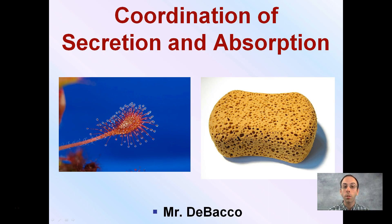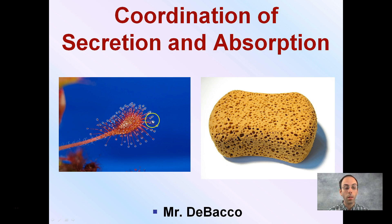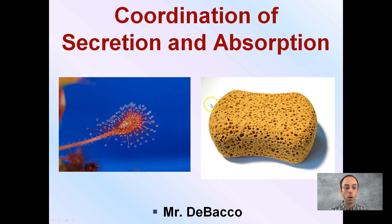Here we're going to look at the coordination of secretion and absorption in relation to the human body digestive system. For secretion, we can look at the sundew, which secretes a clear, very sticky substance that helps trap insects. For absorption, we can think of the sponge absorbing water.